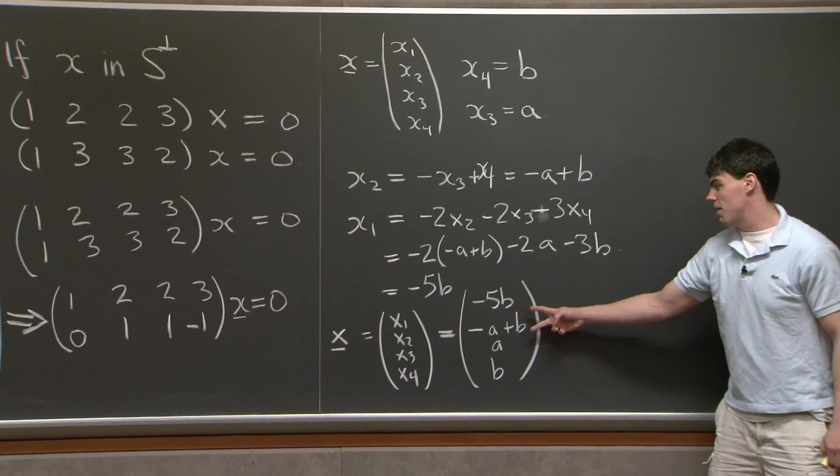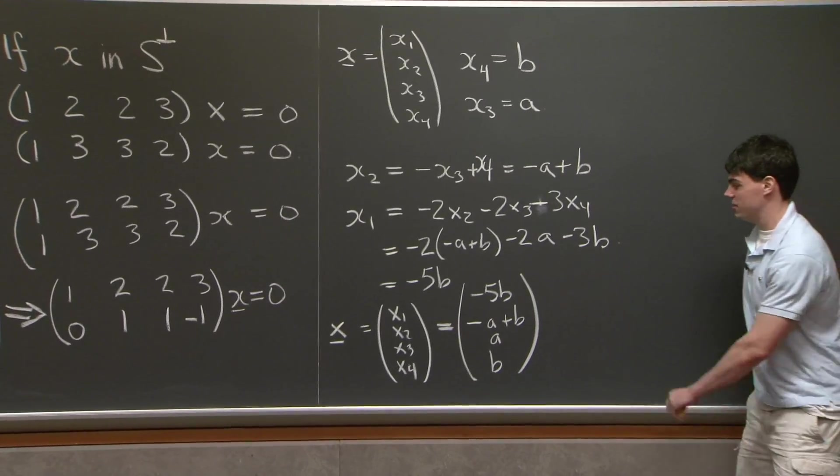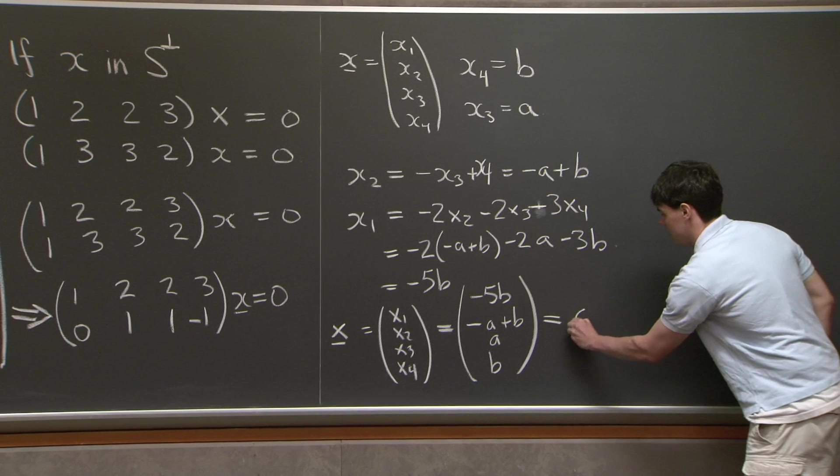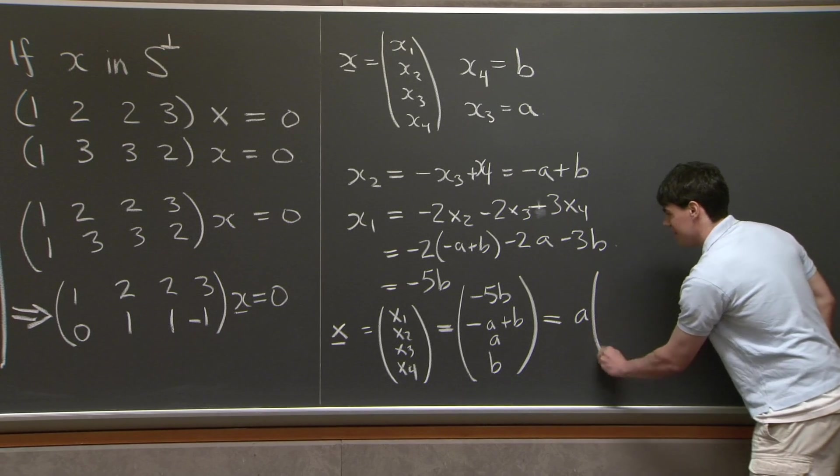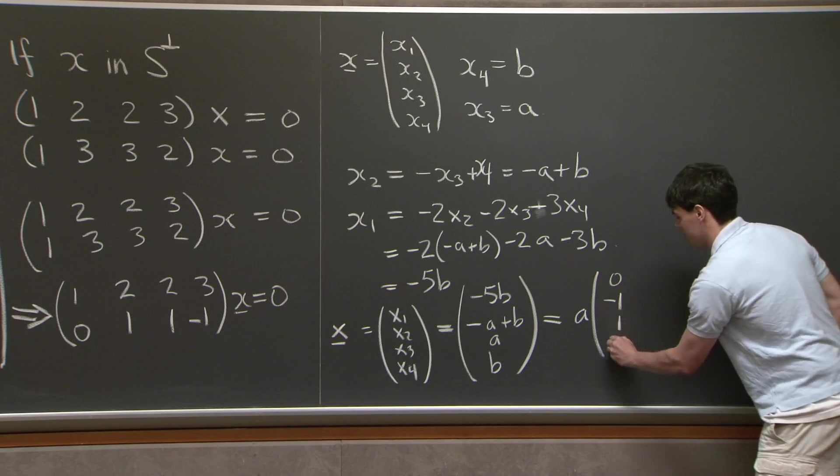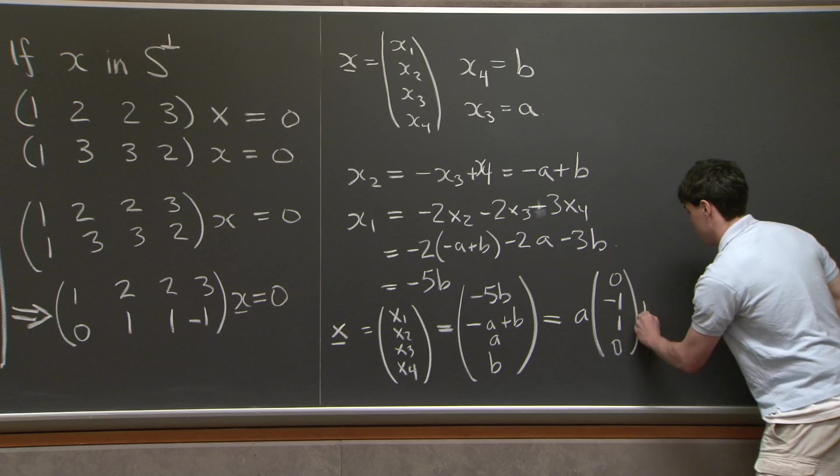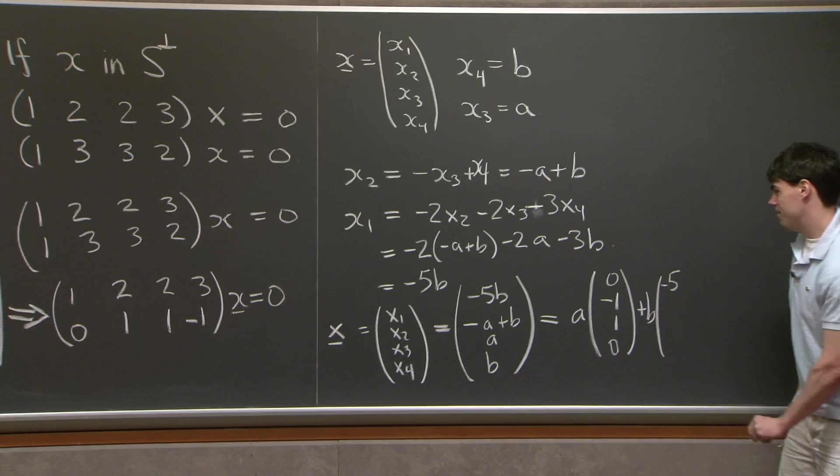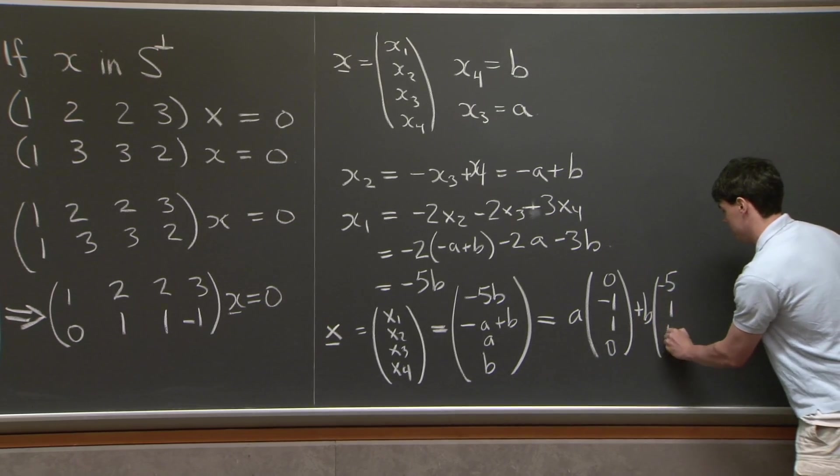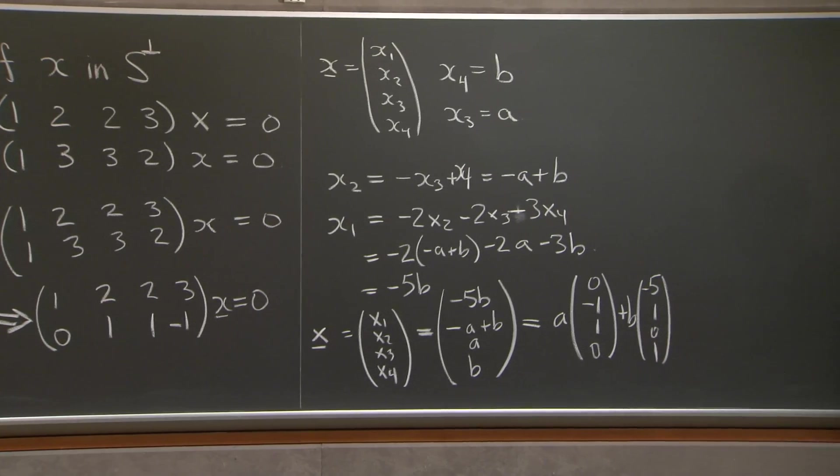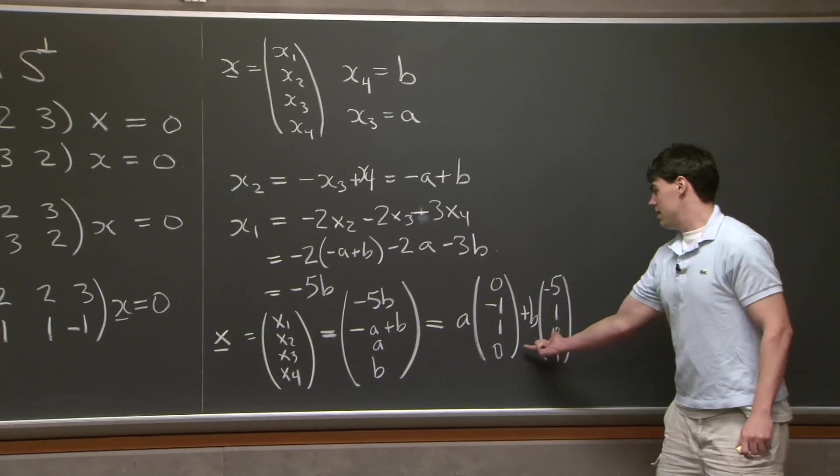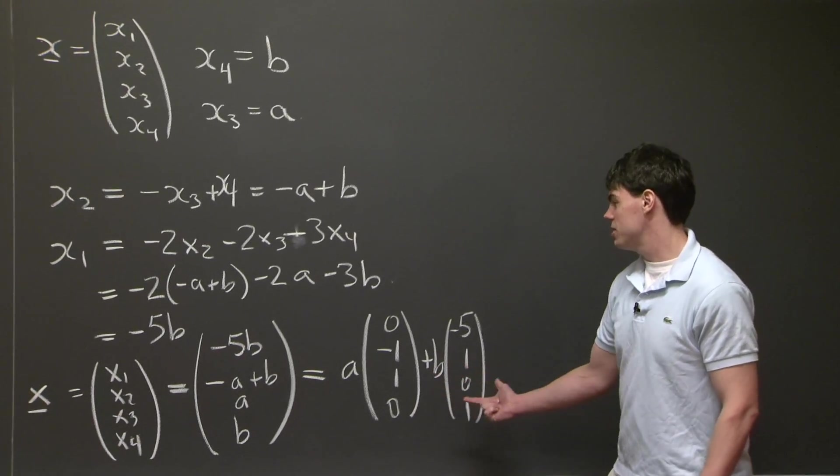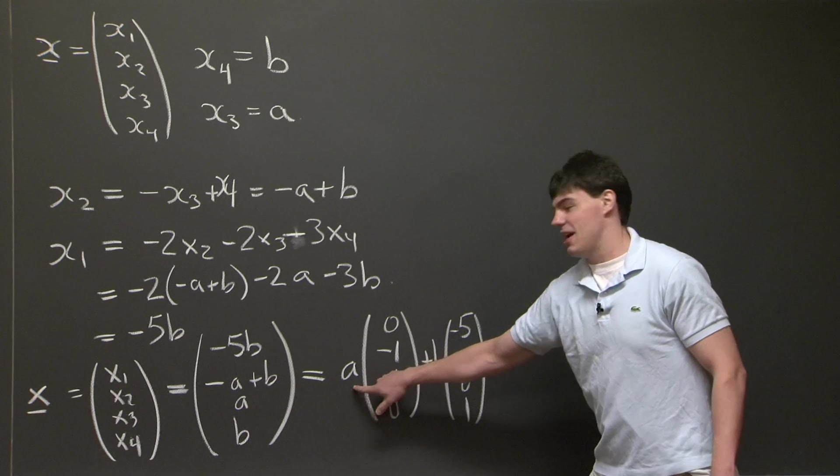And now what we can do is we can take this vector and we can decompose it into pieces which are a multiplied by a vector and b multiplied by a vector. So you'll note that this is actually a times (0, -1, 1, 0) plus b times (-5, 1, 0, 1).